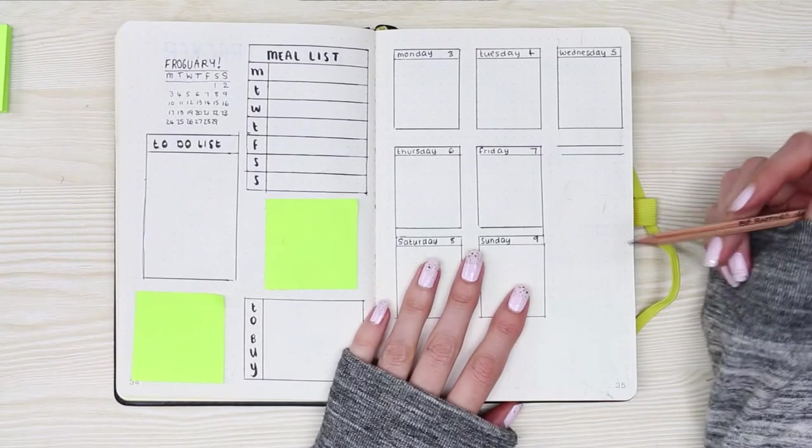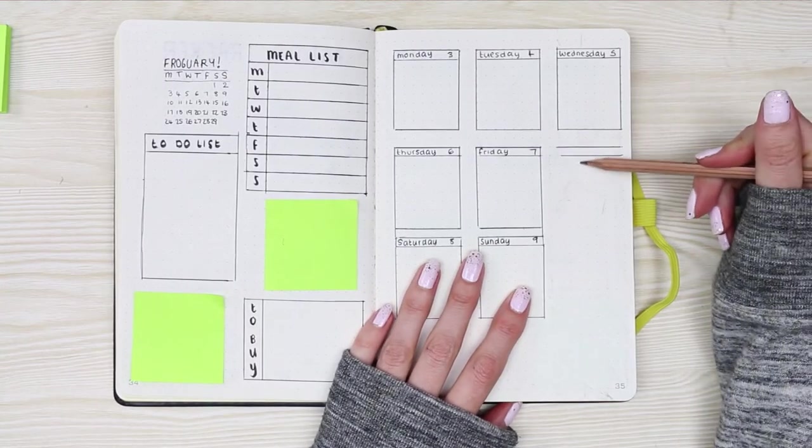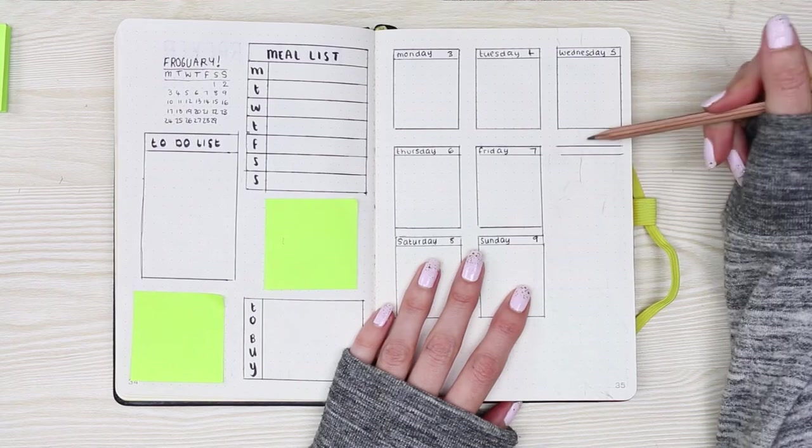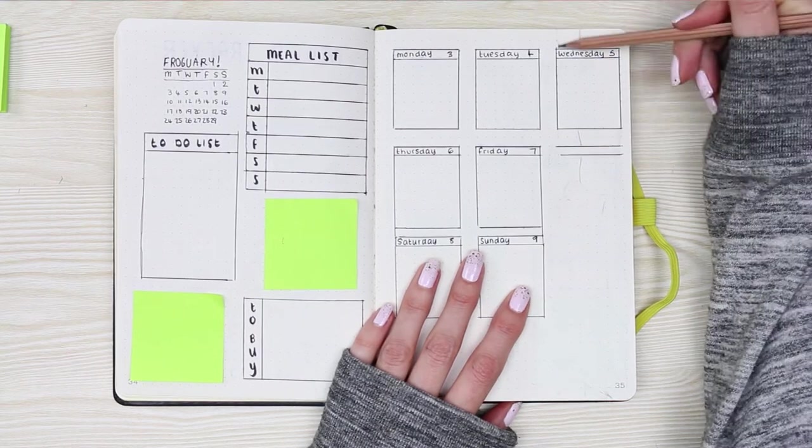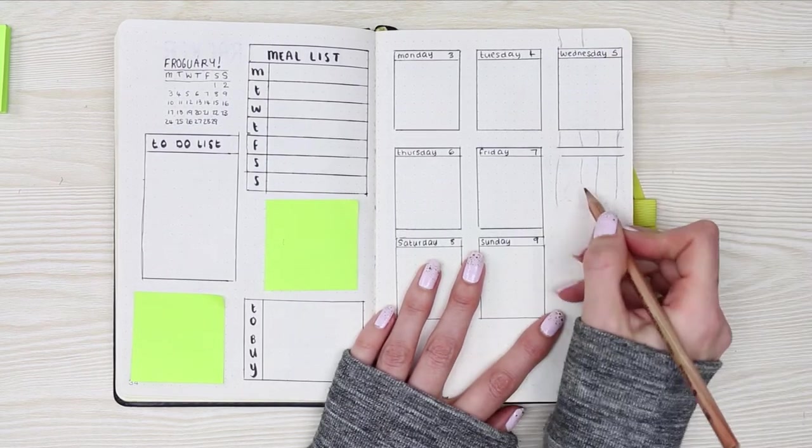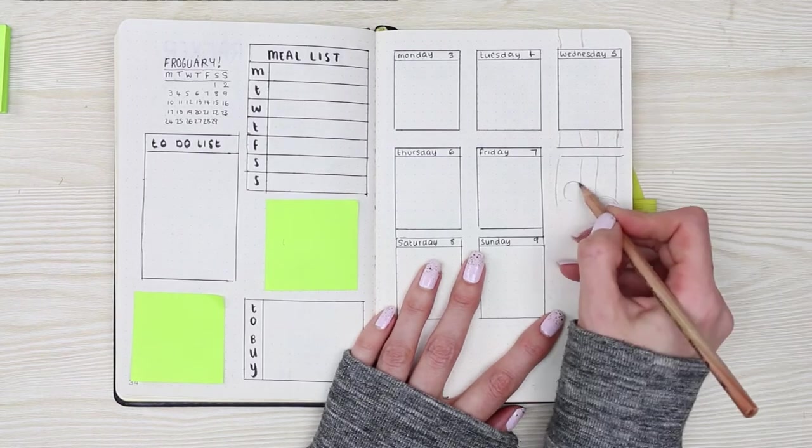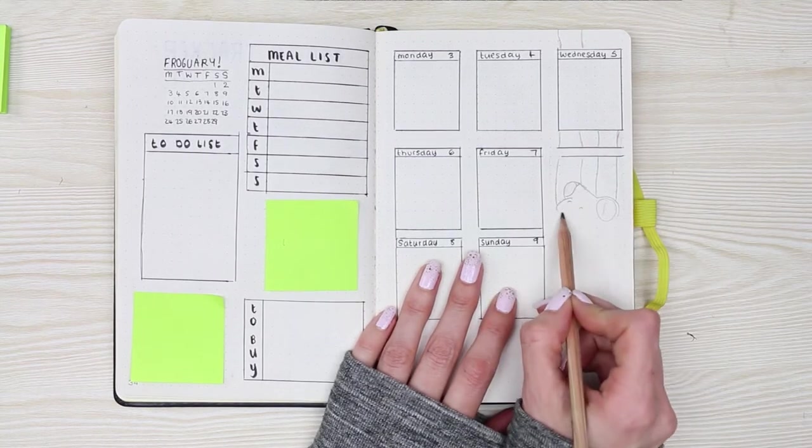For my weekly boxes, it's just really simple box layout. It's nothing fancy at all. And then, of course, I'm going to be finishing it off with a little frog doodle. For this doodle I wanted to try and draw a little tree frog. It's not actually a doodle, it's a sketch. I'm so used to saying doodle, I'm trying to...